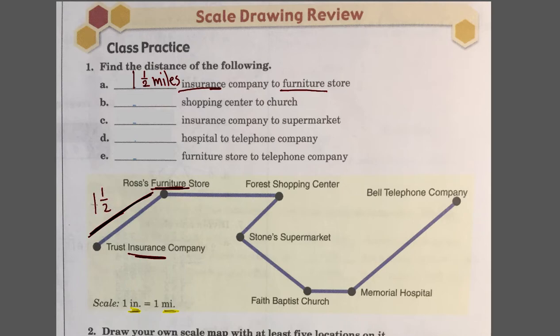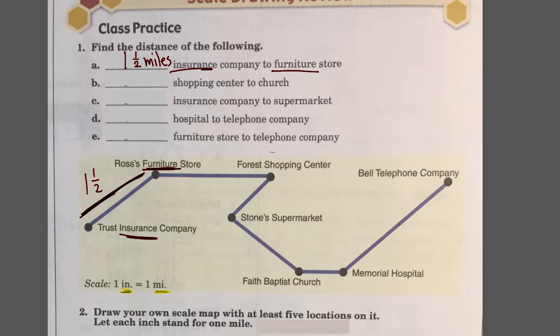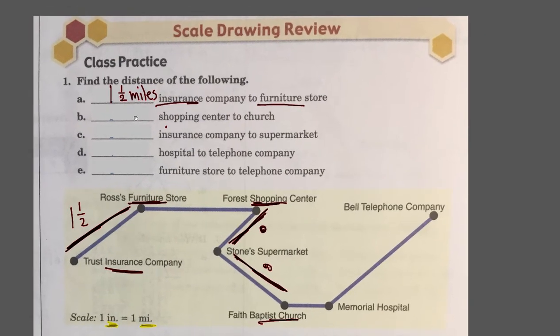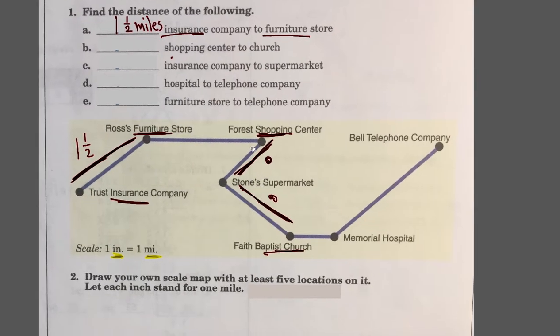Shopping center to church - that's from here to the church down here. That means you would need to add up the measurements from the shopping center to Stone's Supermarket and the distance between the supermarket to the church. You would add up these two values to get the distance in miles. That's about it for number one.